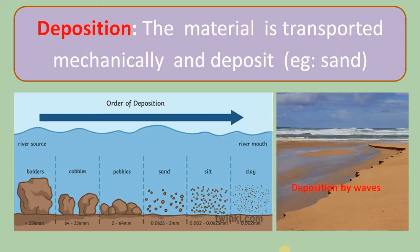Another part of physical geology is deposition — the material is transported mechanically and deposited. For example, sand. See the picture very clearly: how deposition is taking place at the river source and river mouth, how boulders are initially settled, then followed by cobbles, pebbles, sand, silt, and clay. Clay is very close to the river mouth.